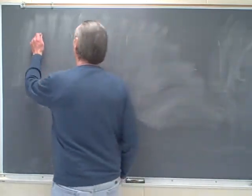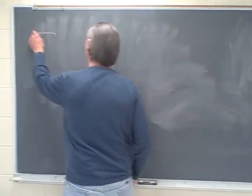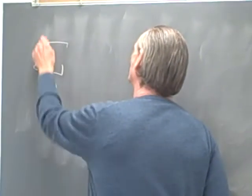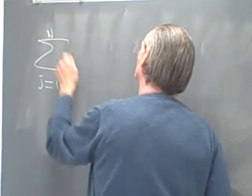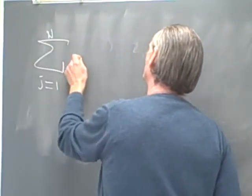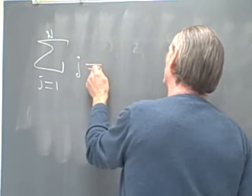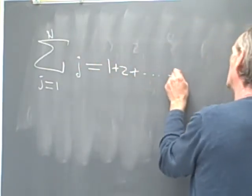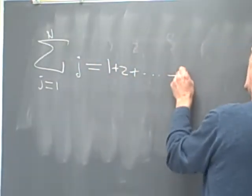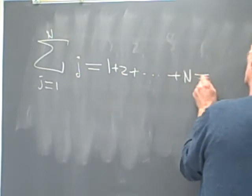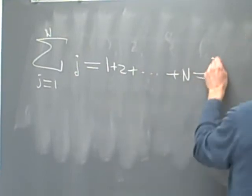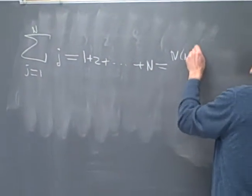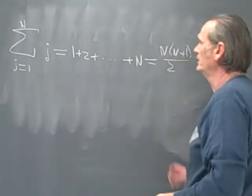The three fundamental identities are: the summation j equals 1 to n of j — that would be 1 plus 2 plus ... plus n — which we can write as n times (n plus 1) over 2.